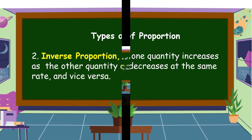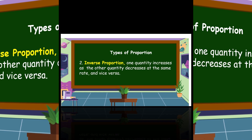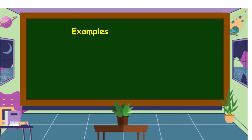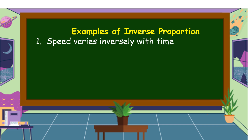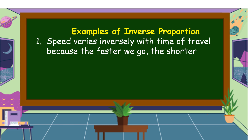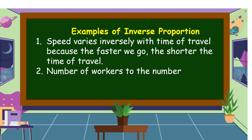The second type of proportion is inverse proportion. One quantity increases as the other quantity decreases at the same rate, and vice versa. Examples of inverse proportion: speed varies inversely with time of travel, because the faster we go, the shorter the time of travel; and number of workers to the number of days the work is to be done.